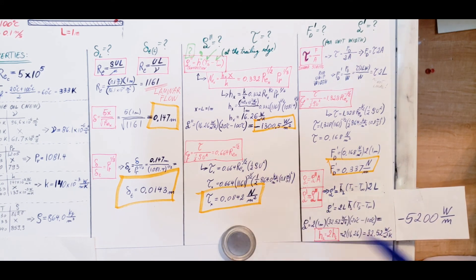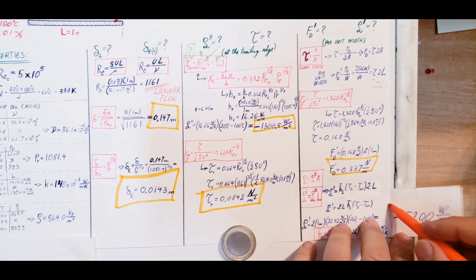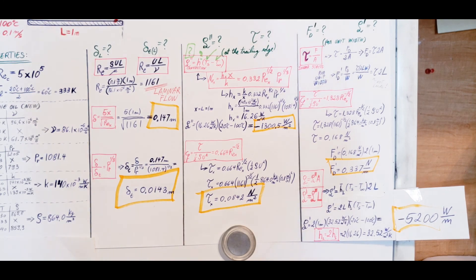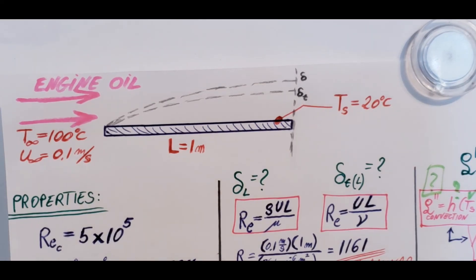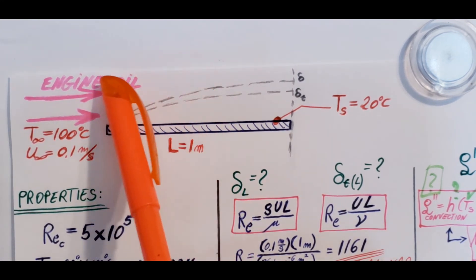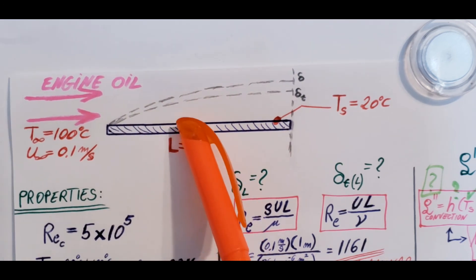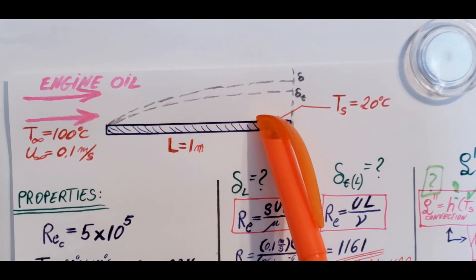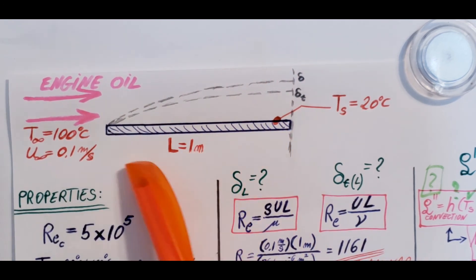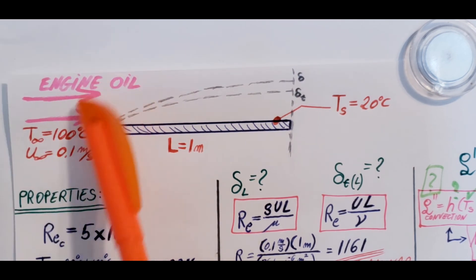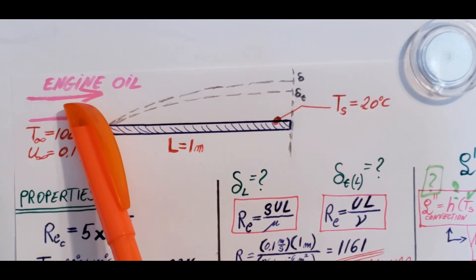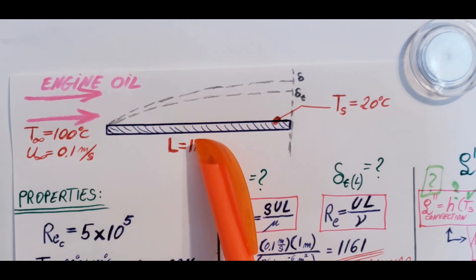Why is the heat transfer negative here and in the local flux result? In many problems, air or fluid flows over a hot plate, meaning the plate is hotter than the fluid, giving a positive heat flow from plate to fluid. Here, however, the engine oil is at 100°C and the surface is at 20°C, so the heat transfer goes from the fluid to the plate — hence the negative sign.